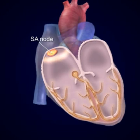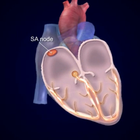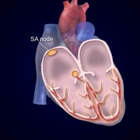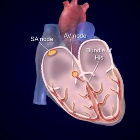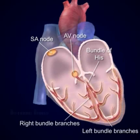After the atria contract, the impulse travels to the atrioventricular node, located in the lower portion of the right atrium. The atrioventricular node, in turn, conducts the impulse through a series of tissues — the atrioventricular bundle, or bundle of His, which splits into the right and left bundle branches that terminate at the Purkinje fibers.